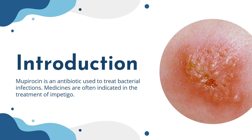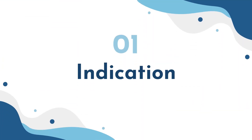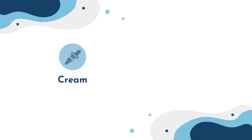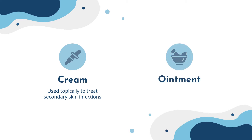Mupirocin is an antibiotic used to treat bacterial infections. It is usually available in two dosage forms on the market. The first form is cream, and mupirocin cream is usually used topically to treat secondary skin infections.